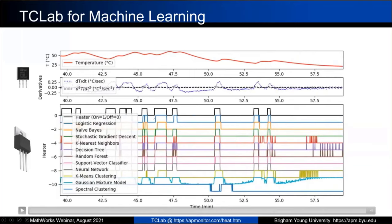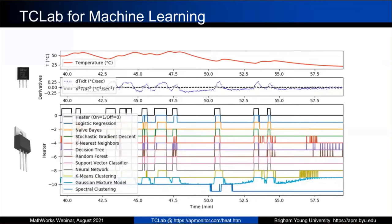The machine learning can detect just from temperature signals whether the heater is on or off. If you commanded it to be on but the algorithm says it's actually off, then the heater is broken. Students can unplug the heater power and see if the machine learning can detect a faulty heater. That's just one more example of what these exercises can demonstrate.